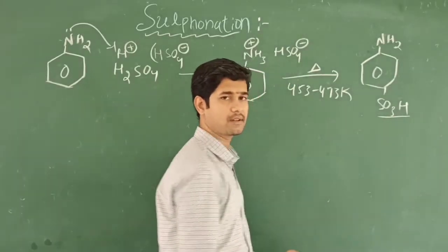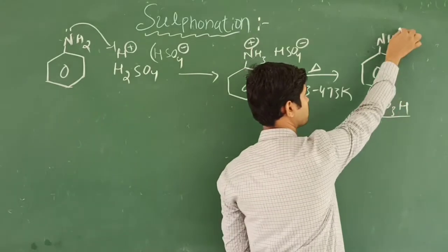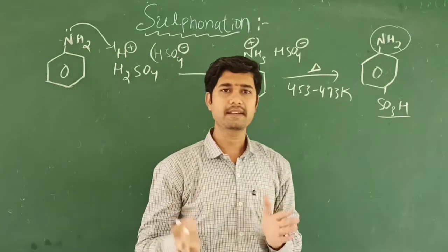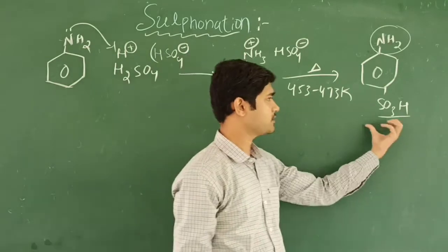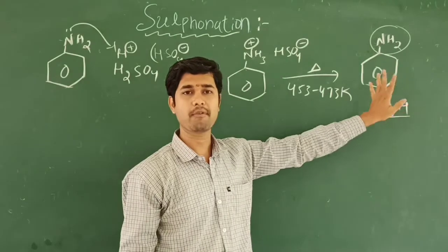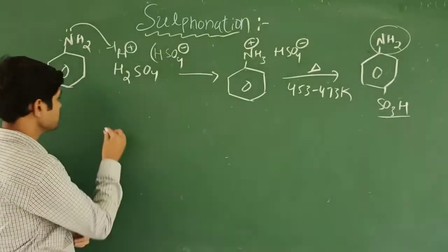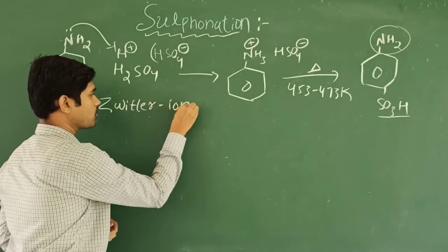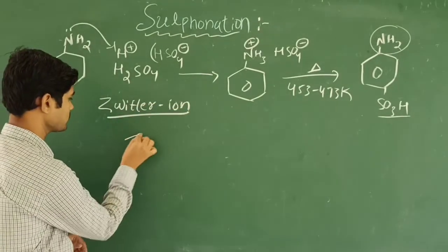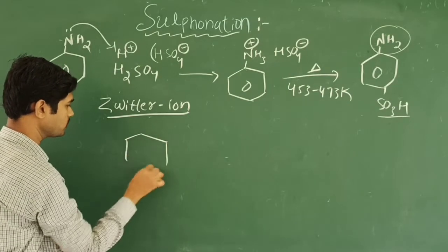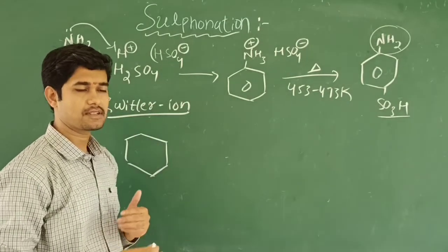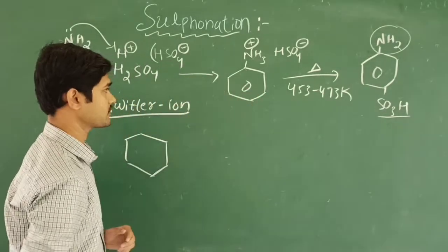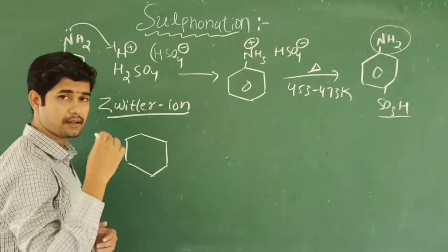This part is acidic and this part is purely basic. So in a compound where both an acid group and a base group are attached, that type of compound is called a zwitterion. Let's see how this takes place. When you see the mechanism you can understand how the SO₃H group will come and attack.